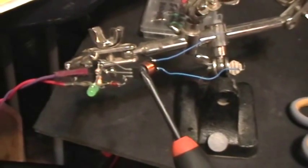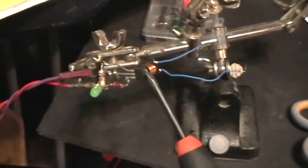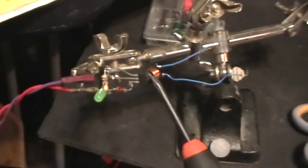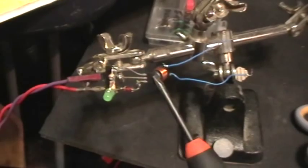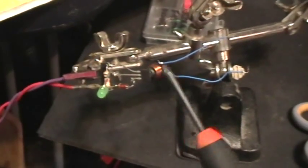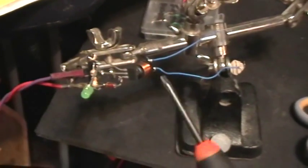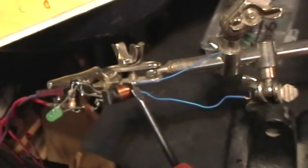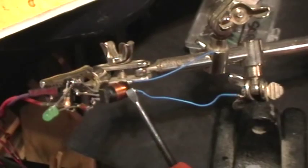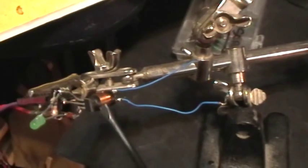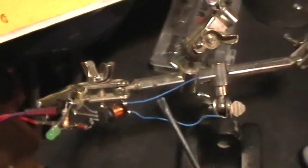That little black chip right there is a U1881 latching Hall Effect Sensor. And this, over here, is just a tiny little inductor that I pulled out of a compact fluorescent light circuit board and I just glued it directly to the face of that Hall Sensor with a little drop of super glue.